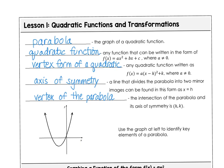Let's look at Lesson 1 and Unit 4 on quadratic functions and transformations. A few vocabulary words to get out of the way. We know that the graph of a quadratic function is known as a parabola, and any time you write a quadratic function in the form y equals ax squared plus bx plus c,